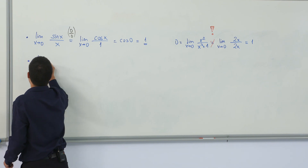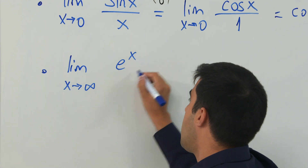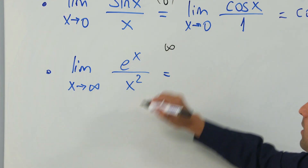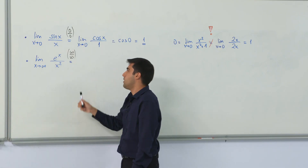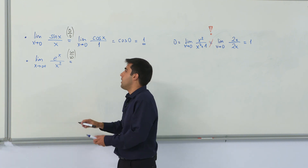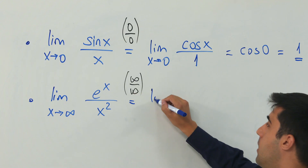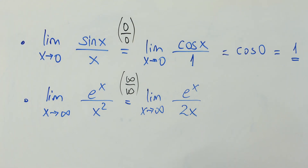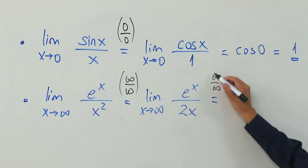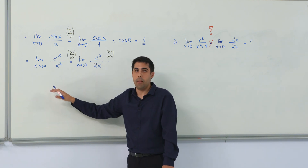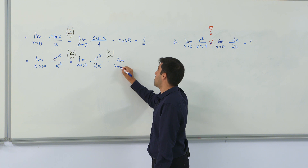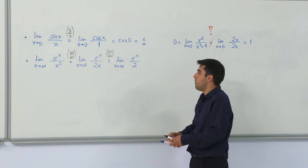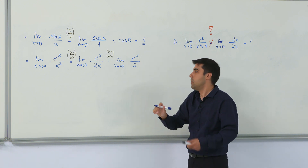Another example: the limit as x goes to infinity of e^x over x squared. Let's check which form we have. e to the infinity gives us infinity over infinity squared, which is infinity. So we have the indeterminate form infinity over infinity, and we can use L'Hôpital's rule. This gives us the limit as x goes to infinity of the derivative of e^x, which is e^x, over 2x. Rechecking, we still have the infinity over infinity form, so we reapply L'Hôpital's rule: the limit as x goes to infinity of e^x over 2. Now we have infinity over 2, which is infinity.